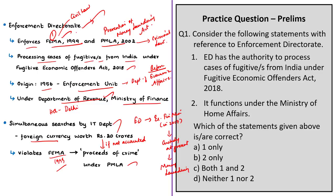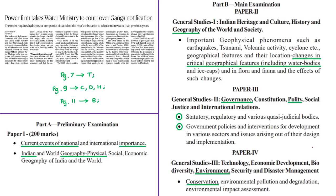From this news article, try to understand the Foreign Exchange Management Act of 1999 and the Enforcement Directorate from an exam point of view. The next news article is about the apprehension of a hydropower producing company over the environmental flow notification of the National Mission for Clean Ganga. We discussed this notification in detail yesterday, covering its important provisions and advantages — for those provisions, kindly refer to yesterday's video.